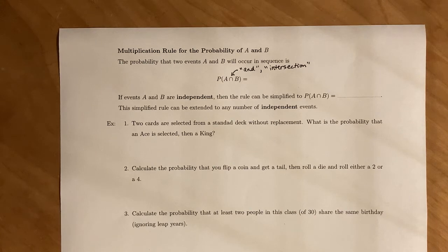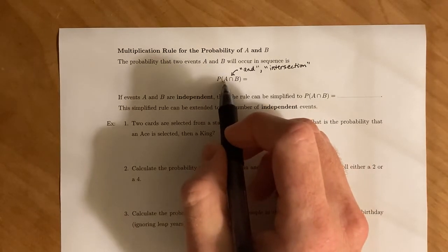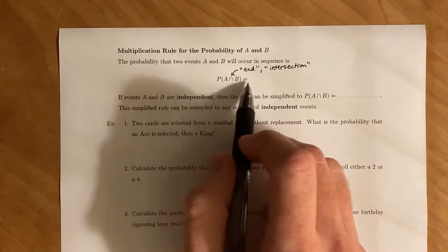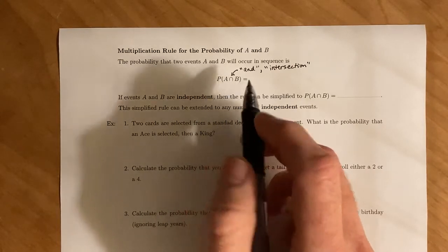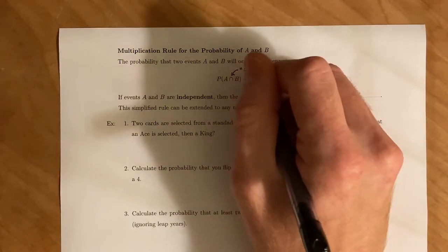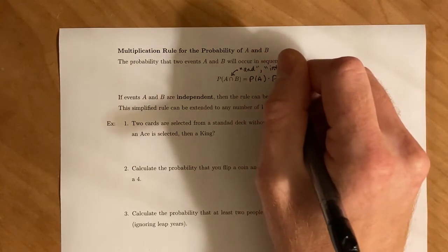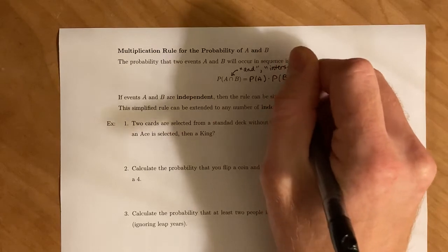So the probability that two events, A and B, will occur in sequence, the probability that A and B both happen, well this is just going to be a rearrangement of the conditional probability statement. So this will be the probability of A times the probability of B given A.